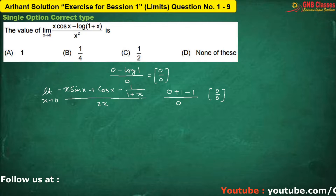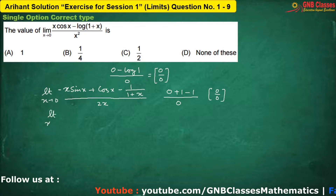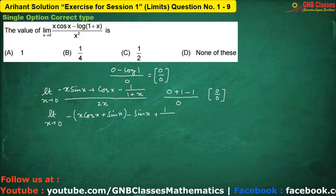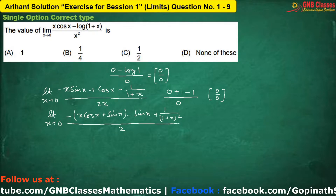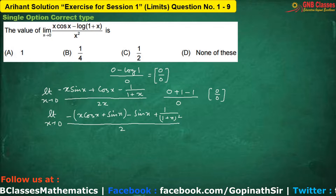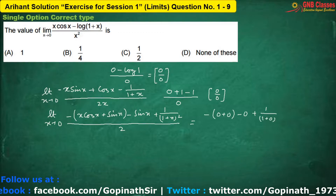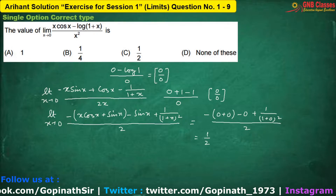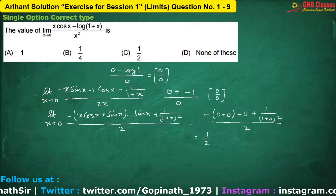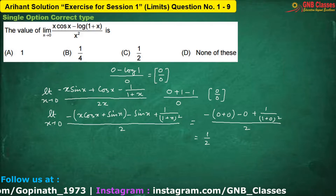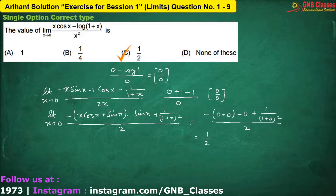So again applying L'Hôpital's rule — differentiating numerator and denominator separately. If I put the limiting value, our value for this limit is half. Hence, again option C is correct. Have you understood it? Let us move for the next problem.